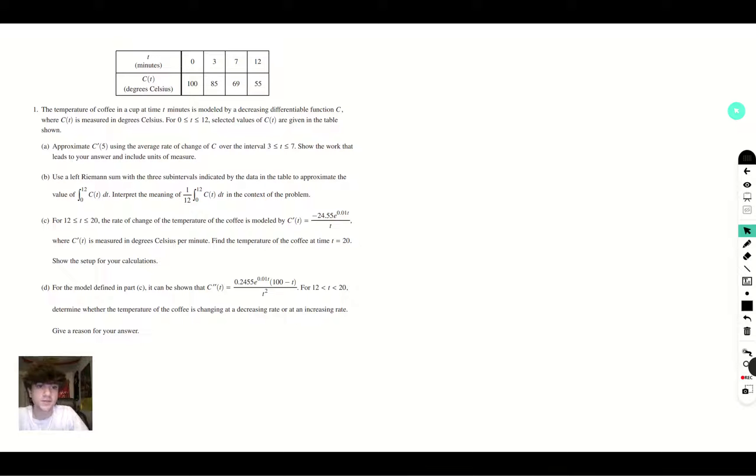The temperature of coffee in a cup at time T minutes is modeled by a decreasing differentiable function C, where C of T is measured in degrees Celsius. For the interval 0 to 12, selected values of C of T are given in the table shown. Approximate C prime of 5 using the average rate of change of C over the interval 3 to 7. Show the work that leads to your answer and include the units of measure.